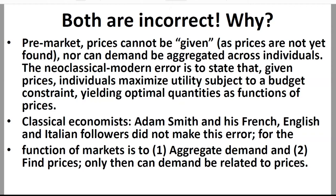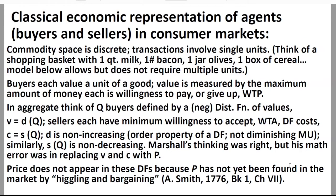If you don't learn anything else from this lecture, learn that — because that's the point. Now, how did classical economists represent agents, that is buyers and sellers in consumer markets? The commodity space was discrete. Imagine going to the grocery store: what's in your market basket? Things like a quart of milk, a pound of bacon, a jar of olives, a box of cereal — they're all discrete items. In a few cases you might buy a second unit, but mostly you're buying one unit of each. So one unit is the canonical case.